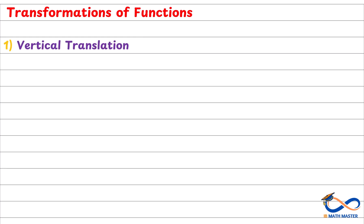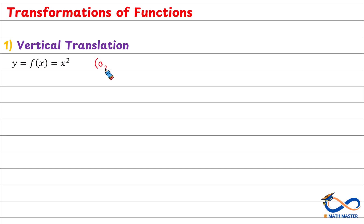We will start with vertical translation, and we will start with this function here, y or f of x equals x squared. This is the basic quadratic function that we will be using with most of the transformations in today's lesson. It passes through the origin (0, 0), because if you replace x by 0, y will be 0 squared, which is 0.